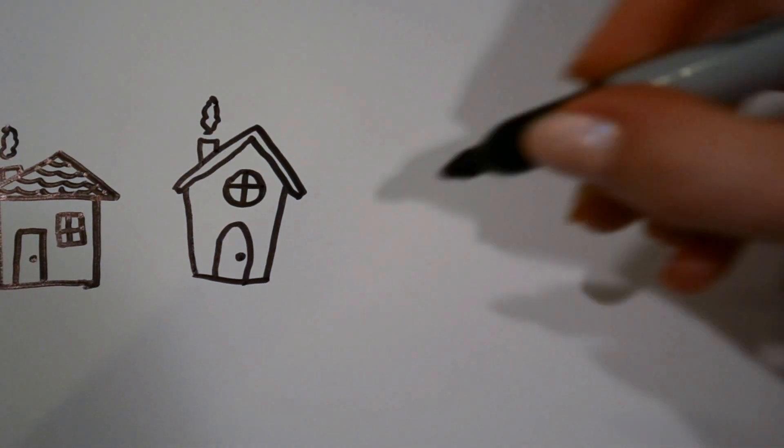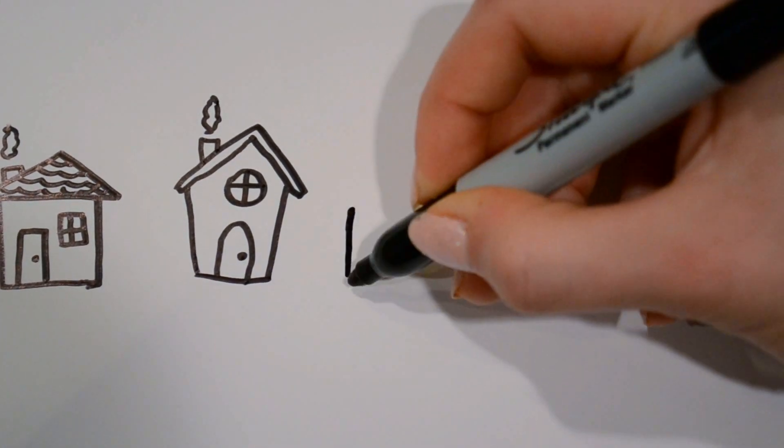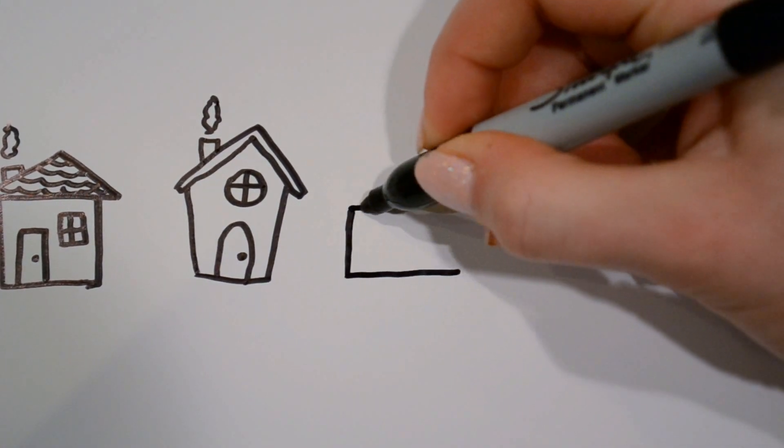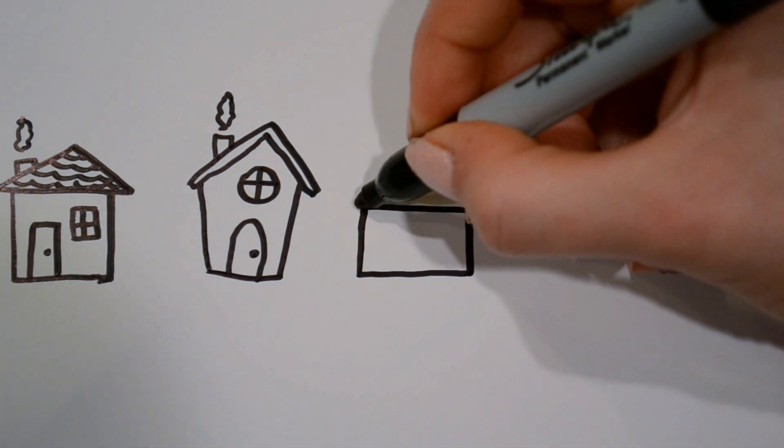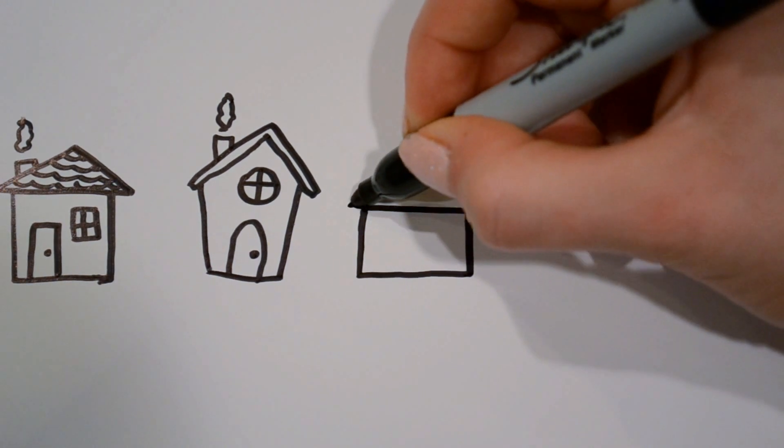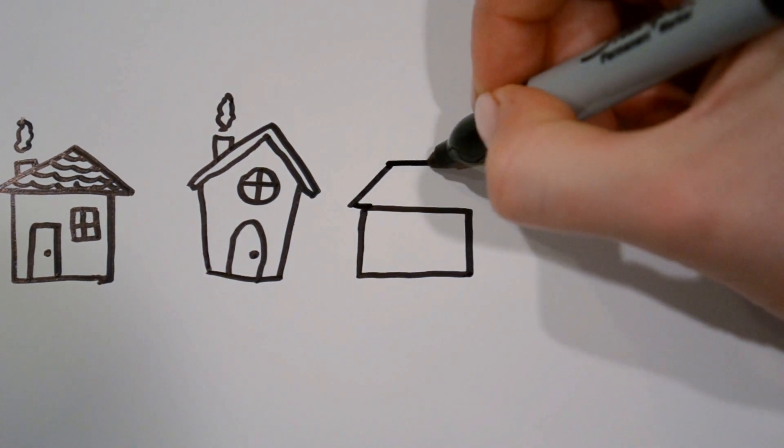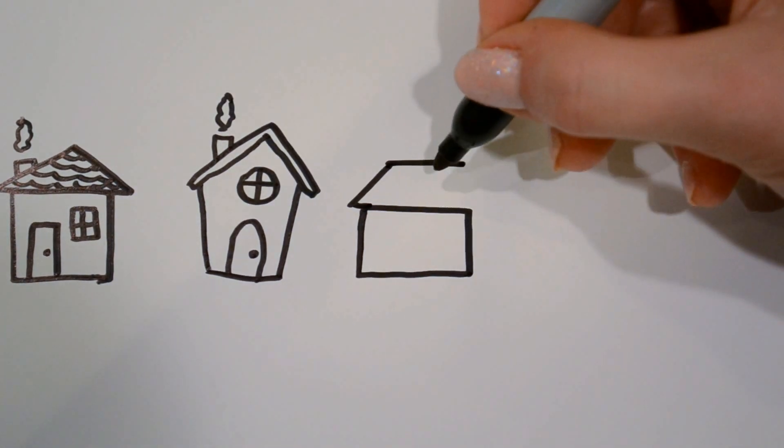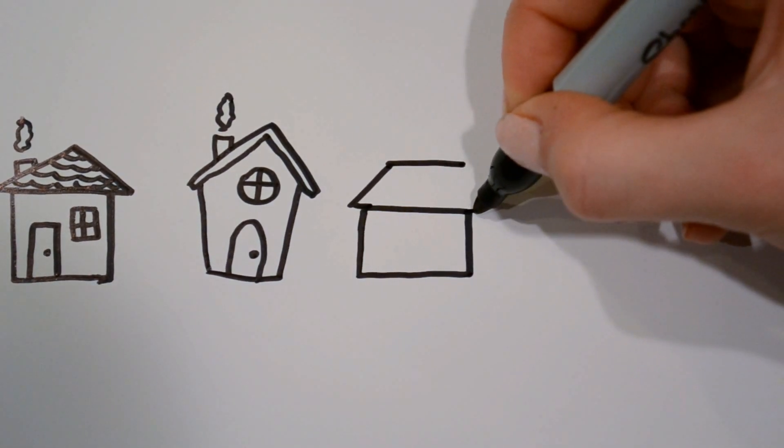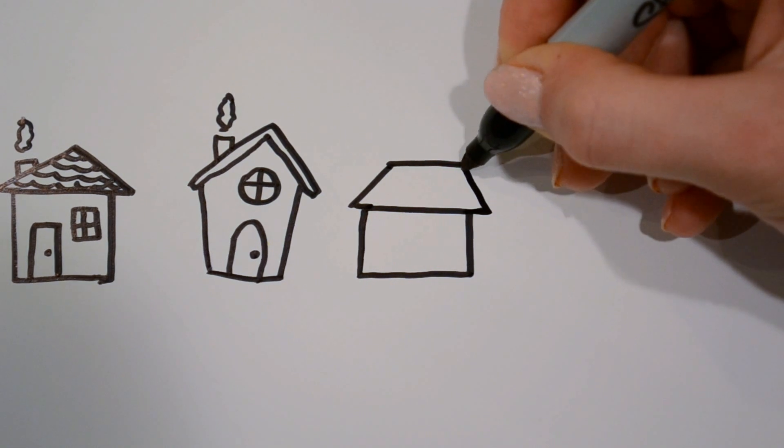Now the third house I'm going to draw will be a rectangle. And then for this roof I'm going to draw kind of a trapezoid shape where instead of pointing the triangle I'm just going to flatten it off like this.